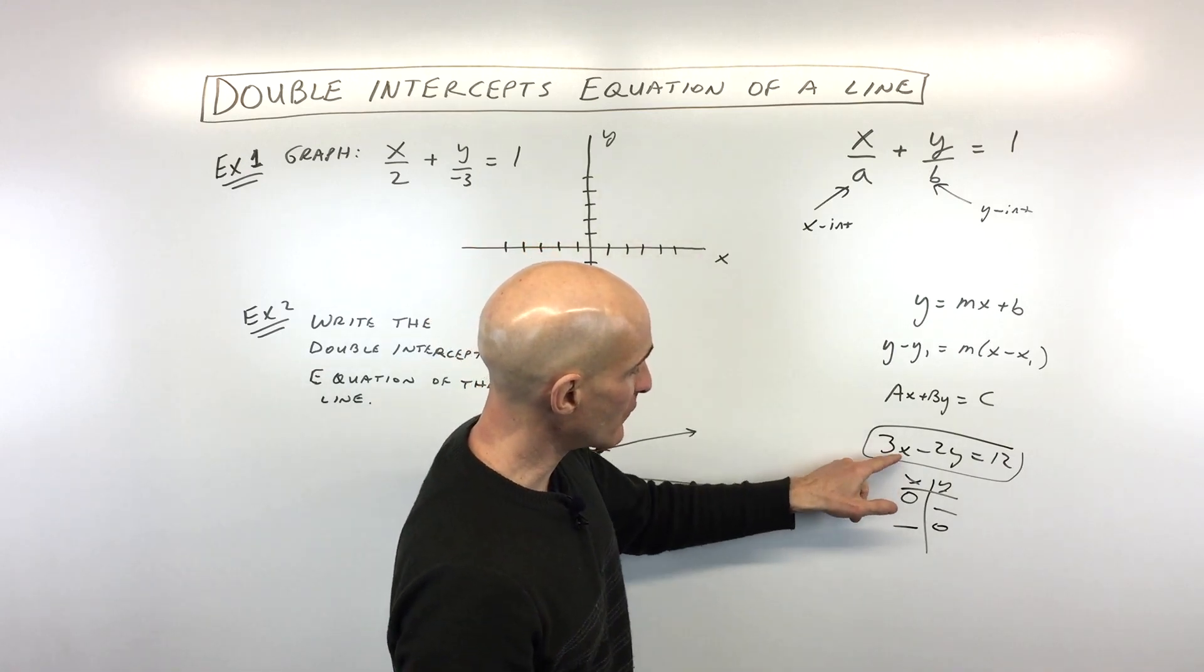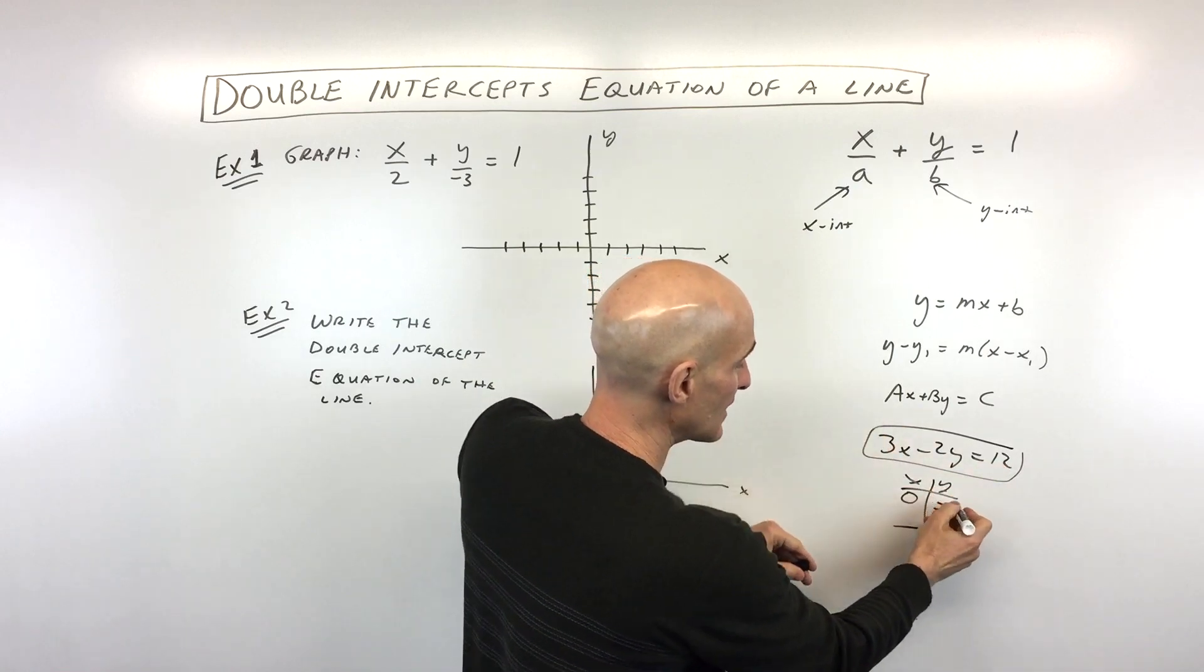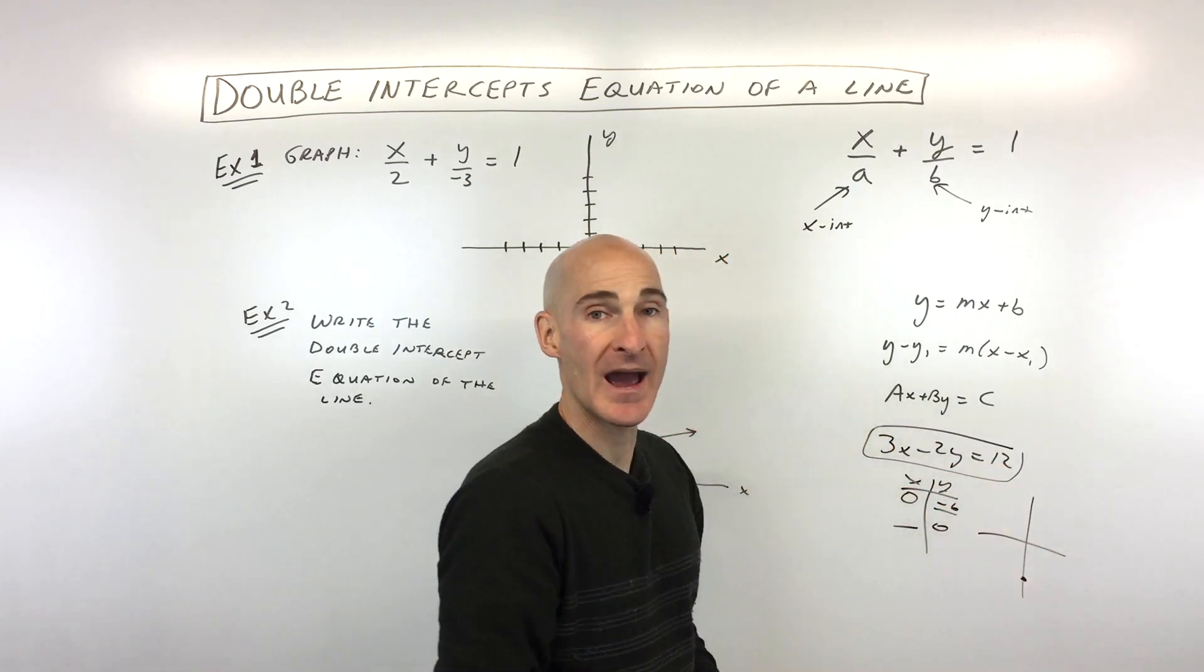So, for example, if I put 0 in for x, anything times 0 is 0. And if I divide by negative 2, you can see y is negative 6. And so that's going to be where it crosses the y-axis.